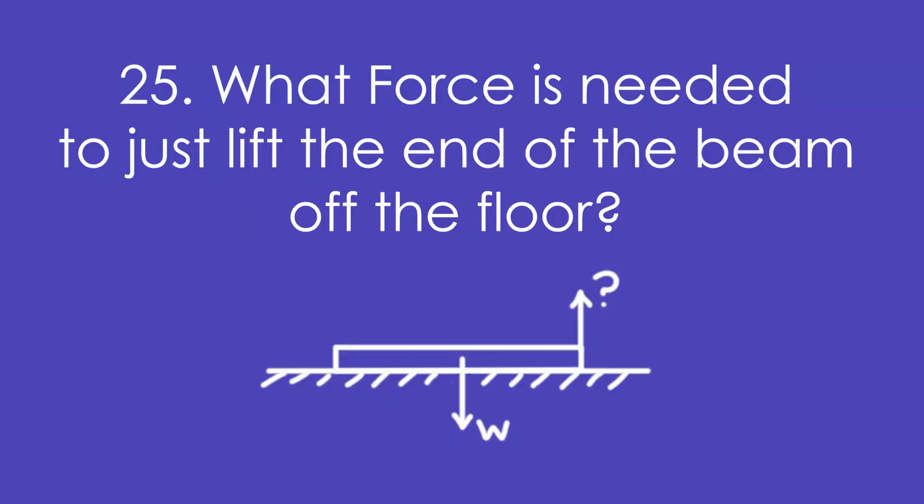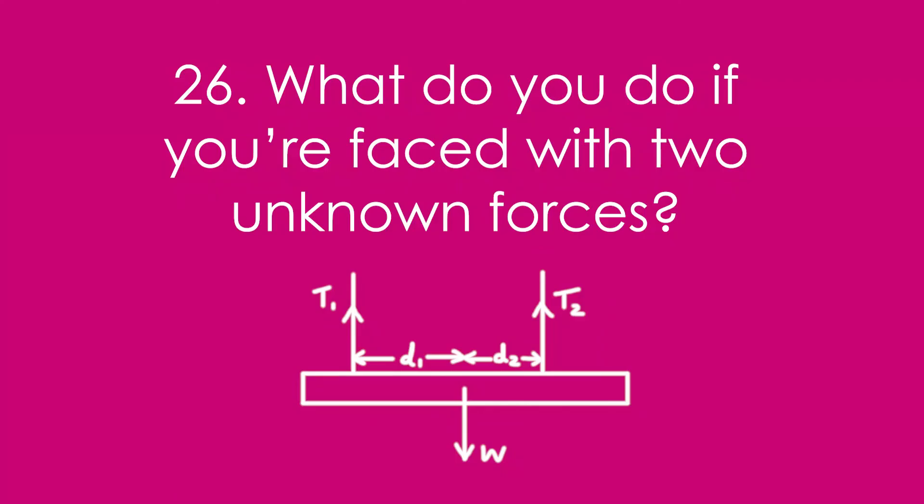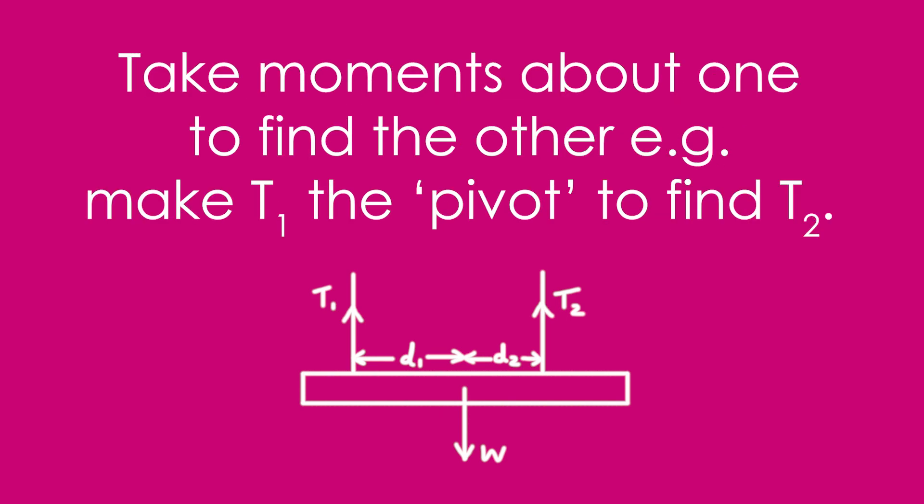Twenty-five, what is the force needed to just about lift the end of the beam off the floor? It's half the weight, because we can treat the left end as the pivot. Twenty-six, what do you do if you're faced with two unknown forces, like tension one and tension two here? You take moments about one of them, that is make it the pivot as it were, to find the other one.